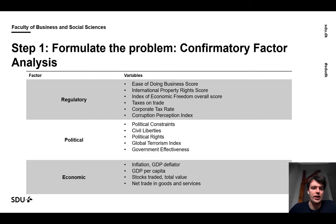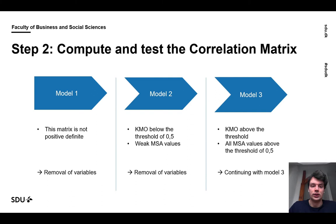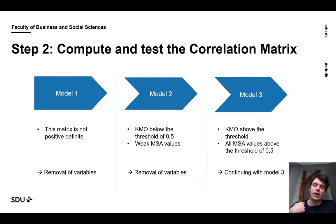Starting with the factor analysis, in step one we formulated the problem. We conducted a confirmatory factor analysis and we expected that our chosen variables would be assigned to a regulatory, political or economic factor. In step two, computing and testing the correlation matrix. In our first model, the matrix is not positive definite and therefore we removed variables. In the second model, the KMO was below the threshold of 0.5 and we could recognize weak MSA values, therefore we removed variables again. And in our third model, the KMO was above the threshold of 0.5 and all MSA values were above the threshold of 0.5 as well, and therefore we continued in our analysis with model three.